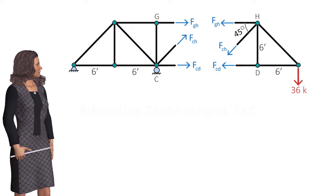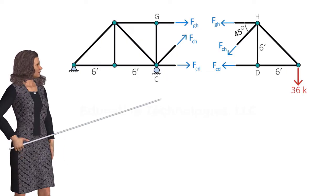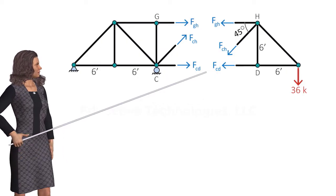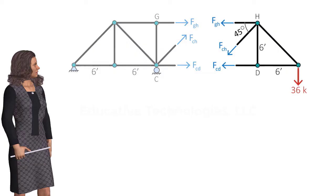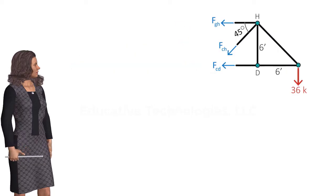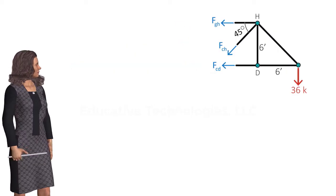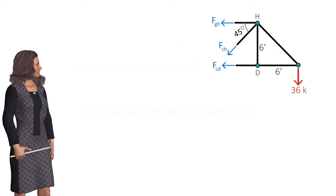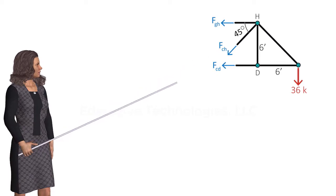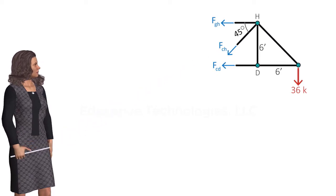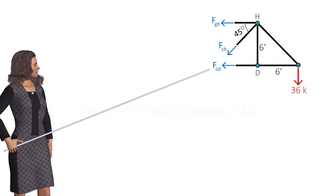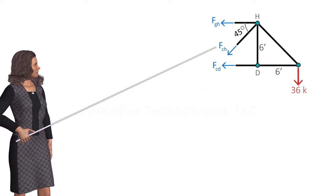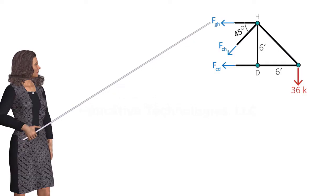To compute the force in member CD, we only need to consider one of the diagrams — we don't need both to do the calculations. Let's consider this diagram, for which we can write three equations in terms of FCD, FCH, and FGH.